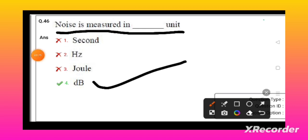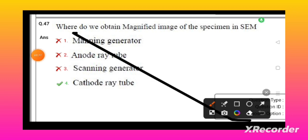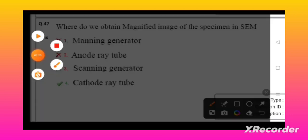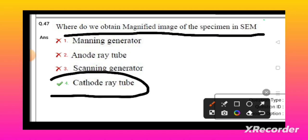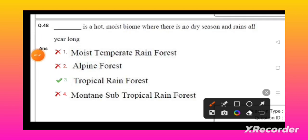Where do we obtain the magnified image of the specimen in SEM? That means cathode ray tube. The hot moist biome where there is no dry season and rainfall year-long - that will be the tropical rainforest.